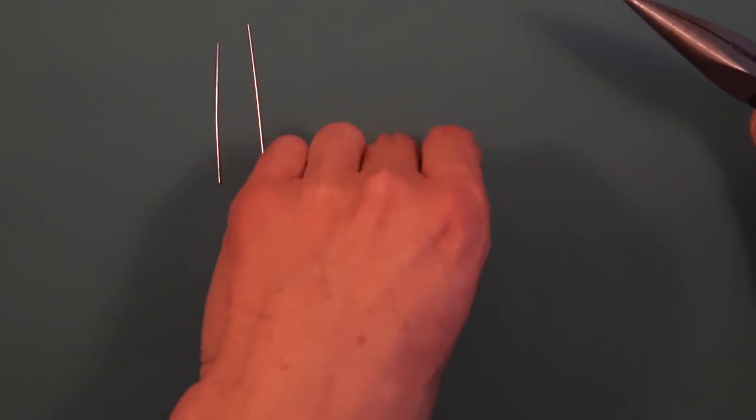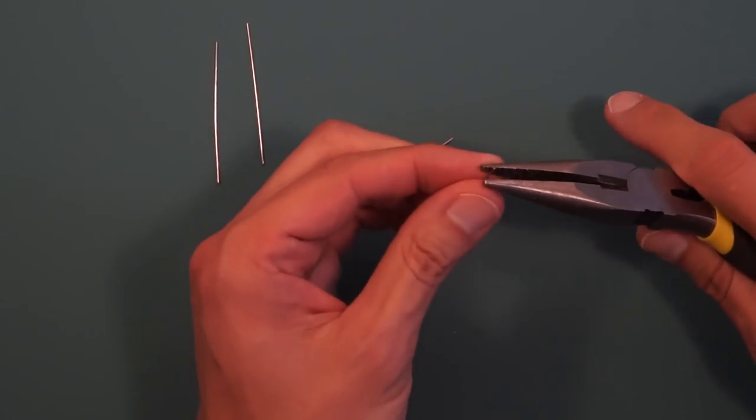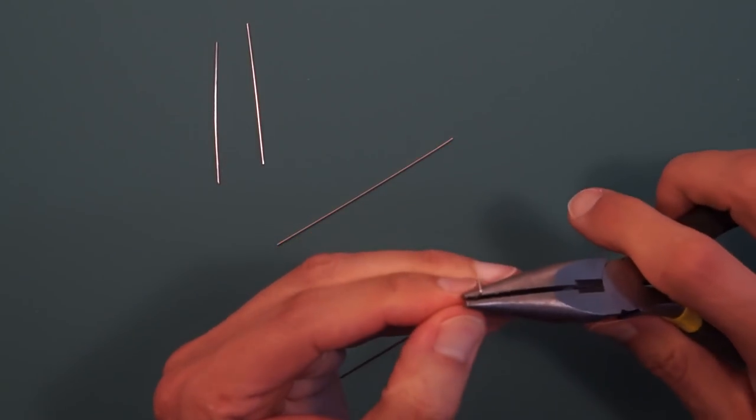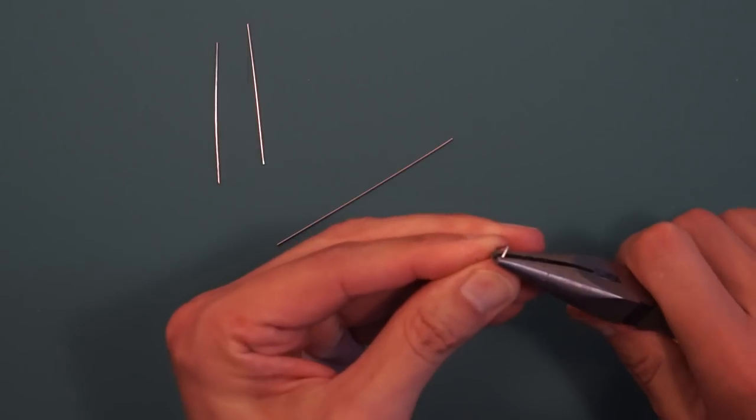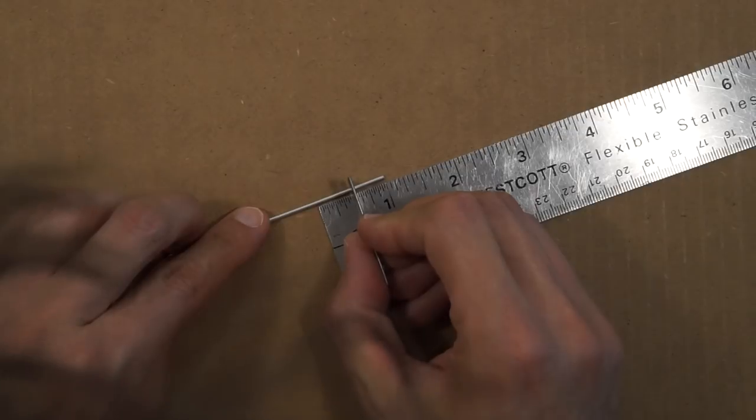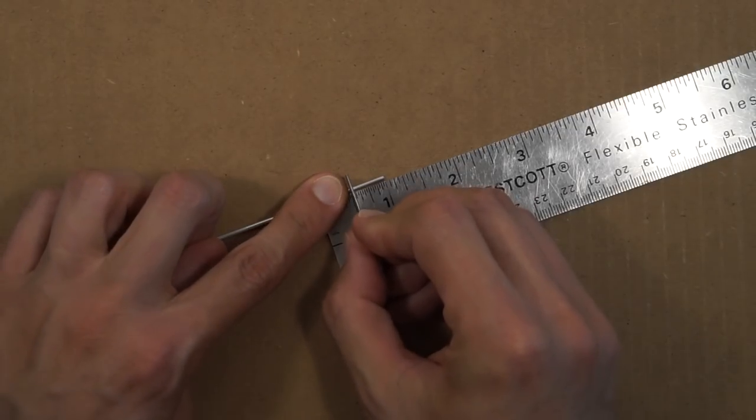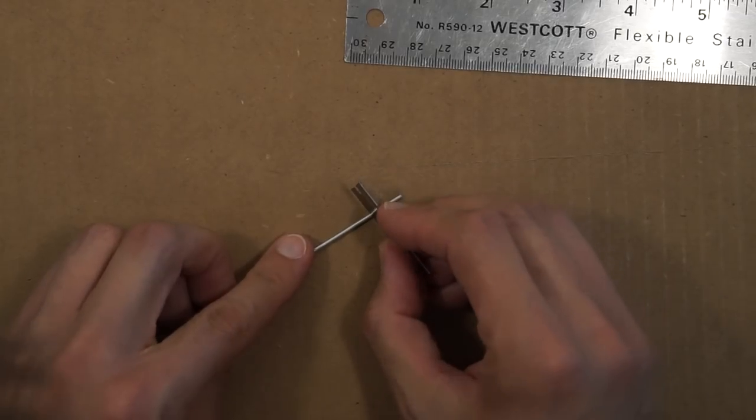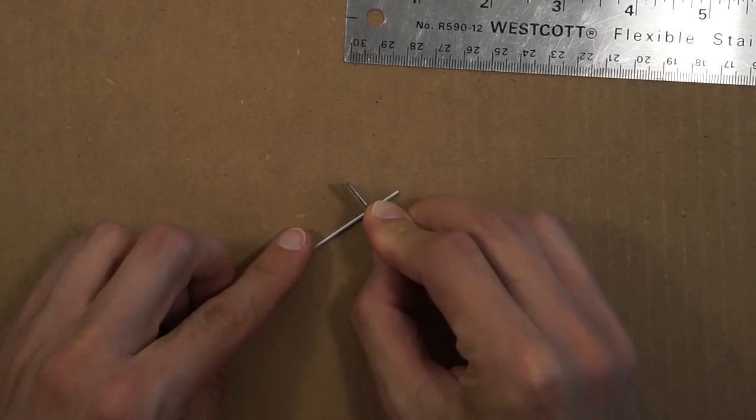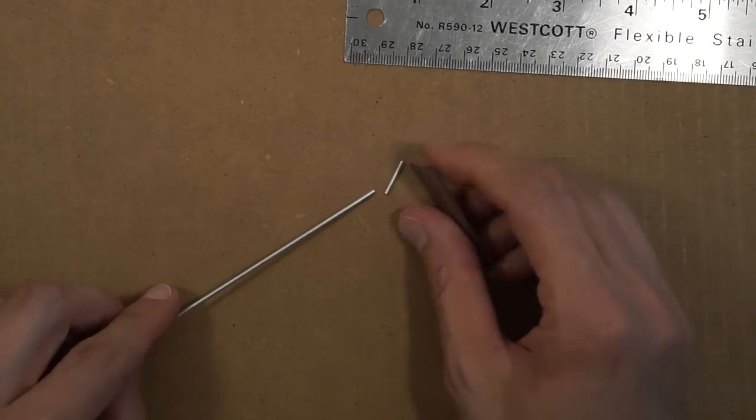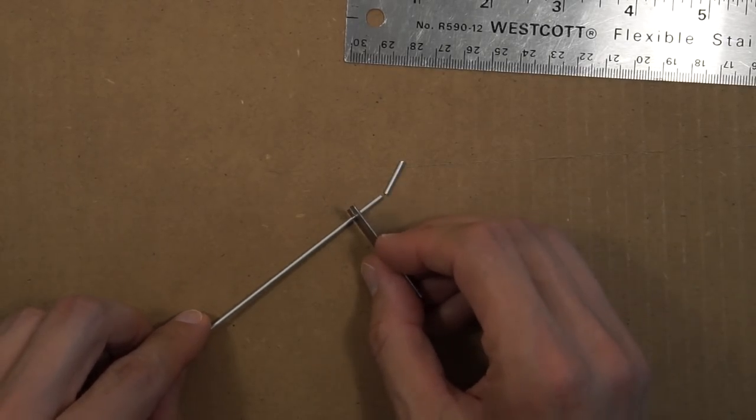The two longer wires are going to be bent into hooks, which hold the rubber band. We'll cut the aluminum tubing by rolling over it with a razor blade. We need three pieces that are half an inch long.